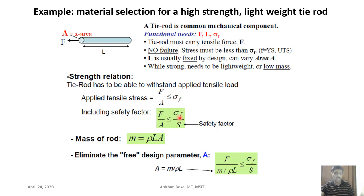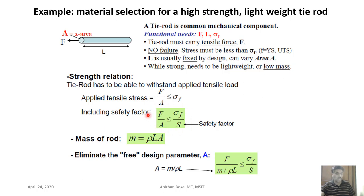Cross-sectional area is the free variable. From the strength condition, F/A ≤ σF/S. The mass of the rod is m = ρ × L × A (density times length times cross-sectional area). Now we can eliminate the free design parameter A from these two equations.